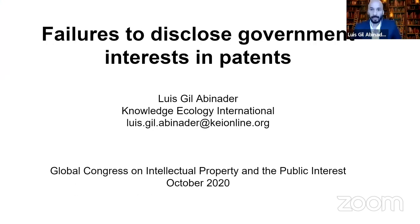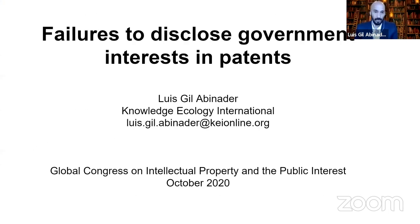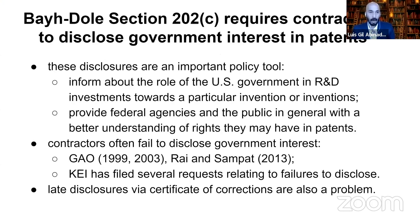I'm going to be talking about failure to disclose government interest in patents. This is work that we've been doing at Knowledge Ecology International. The Bayh-Dole Act requires contractors — normally universities and companies that get money from the U.S. government — to disclose the fact that they receive government money in their patents. This is normally called the government interest statement in patents.